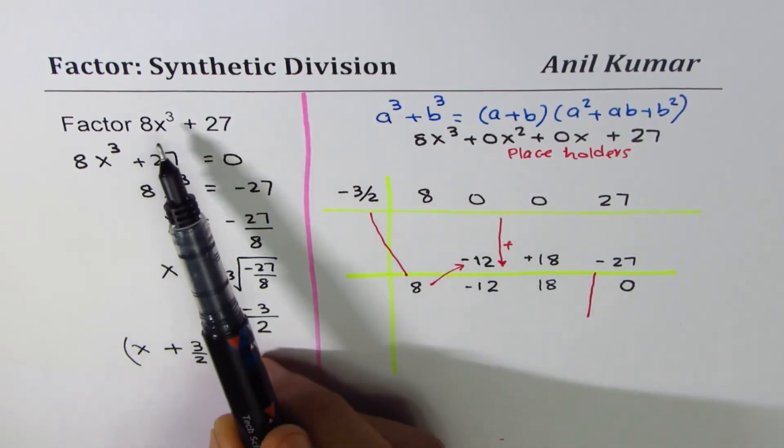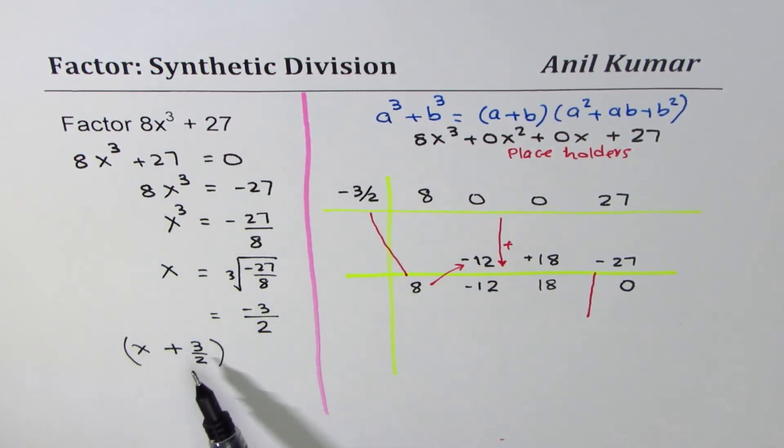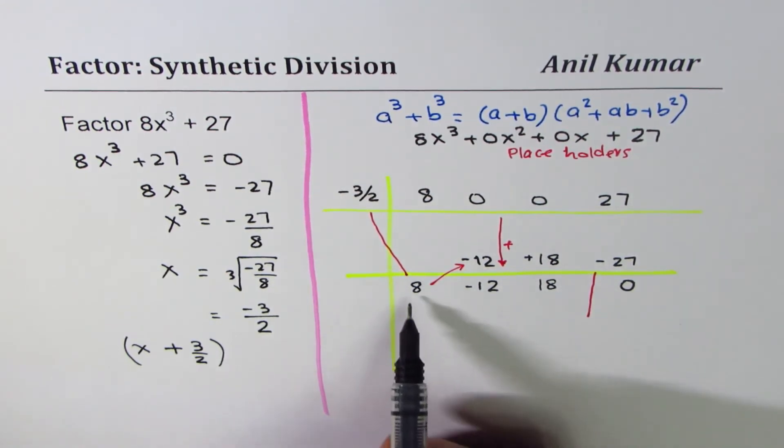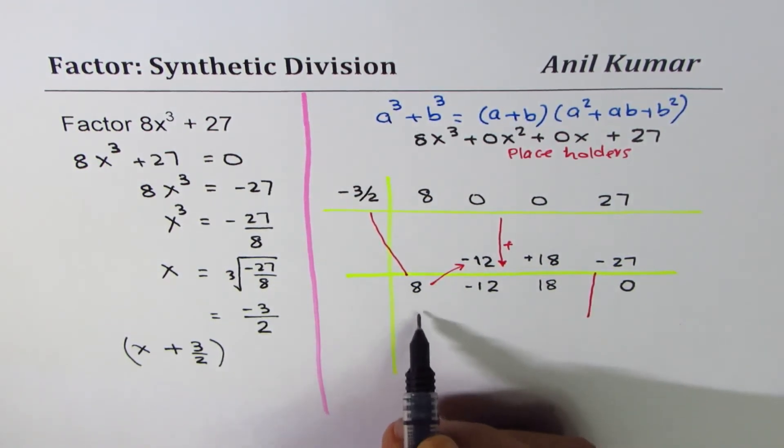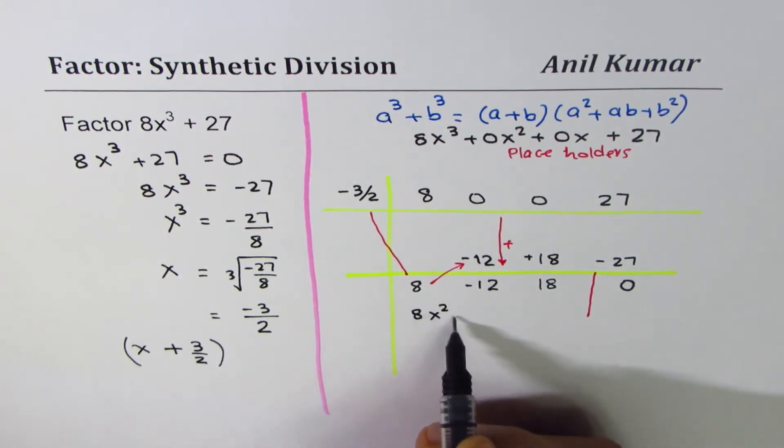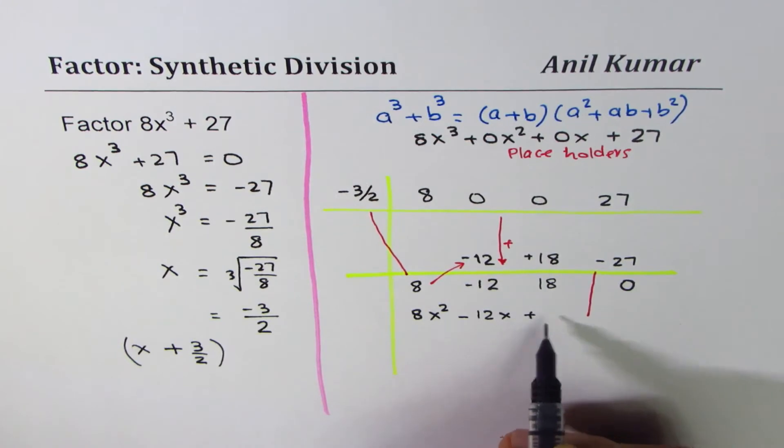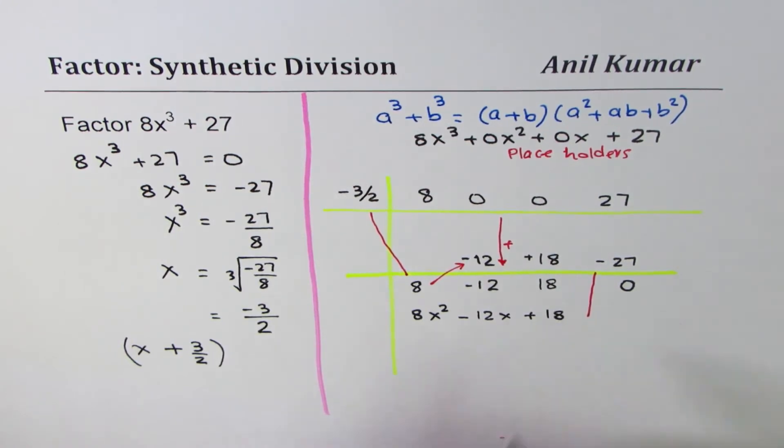When you divide a cubic function with a linear function, you get the quotient as a quadratic function. So you can write down now your factor, which is 8x² - 12x + 18.